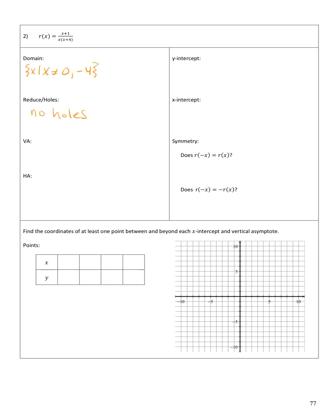Vertical asymptotes happen when the denominator is 0: either x equals 0 or x plus 4 equals 0, giving x equals 0 or x equals negative 4. For horizontal asymptotes, multiplying out gives numerator x plus 1 and denominator x squared plus 4x. The degree of the numerator is 1 and the degree of the denominator is 2, so the horizontal asymptote is at y equals 0, the x-axis.